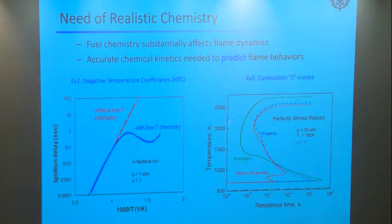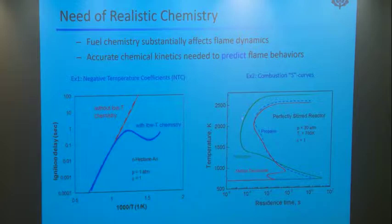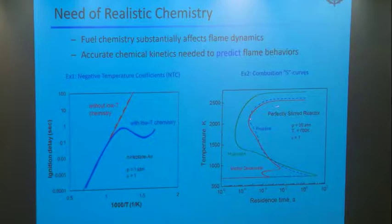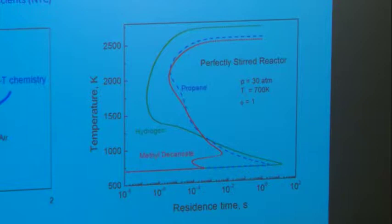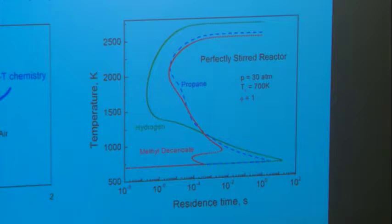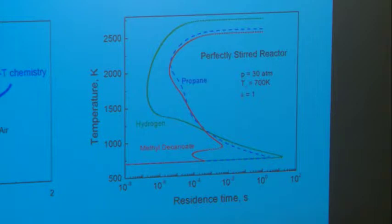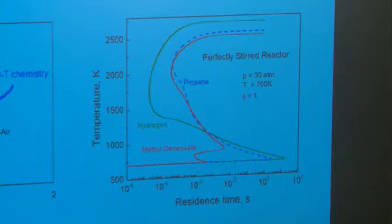If you look at the upper turning point and compare hydrogen with hydrocarbons, the most prominent observation is that hydrogen is much more difficult to extinguish. The extinction residence time for hydrogen is almost two orders of magnitude shorter than for hydrocarbon fuels, whether small or large. So practically, it's not feasible to quench a hydrogen flame — if you ignite it, it's always there, propagating.